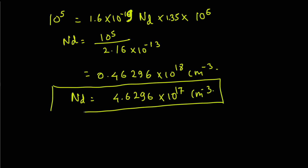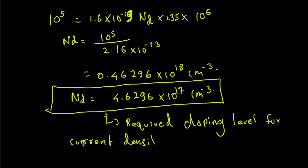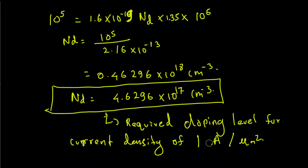That is our final answer: the required doping level for a current density of 1 milliampere per micrometer squared is nd ≈ 4.63 × 10¹⁷ cm⁻³. Hope you guys found this video helpful — thanks for watching, don't forget to subscribe to the channel, see you in the next video.